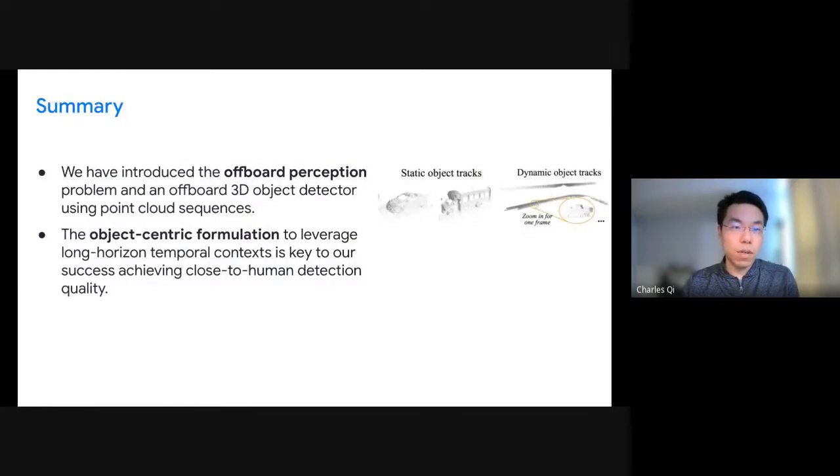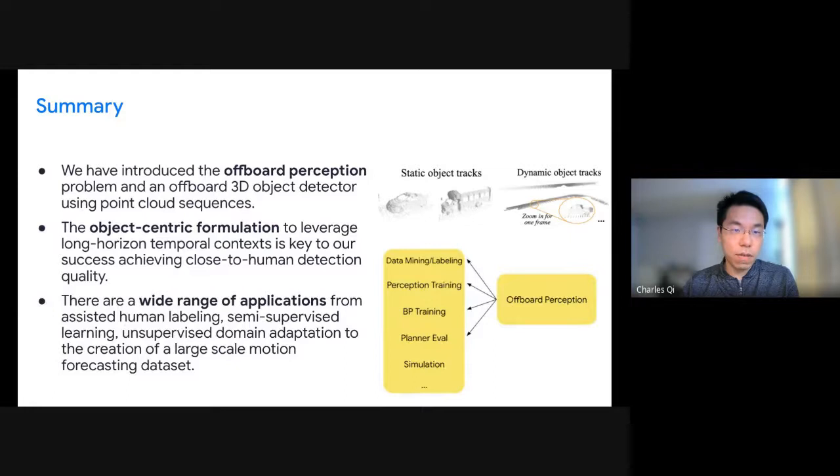To summarize, in this talk, we have introduced the offboard perception problem and an offboard 3D object detector using point cloud sequences. The object-centric formulation to leverage very long horizon temporal context is key to our success, achieving close to human detection quality. And we have also shown many applications of such offboard perception system. There could be many such applications such as assisted human labeling, semi-supervised learning, unsupervised domain adaptation, or using those to create large-scale motion forecasting datasets. Although this work has been focusing on the detection problem, we'll see that in the future, there could be many other offboard perception formulations for tasks like tracking, semantic segmentation, or other models inside the perception stack. And that's it for the talk. Thank you very much for listening. Welcome any questions and comments. Thank you.